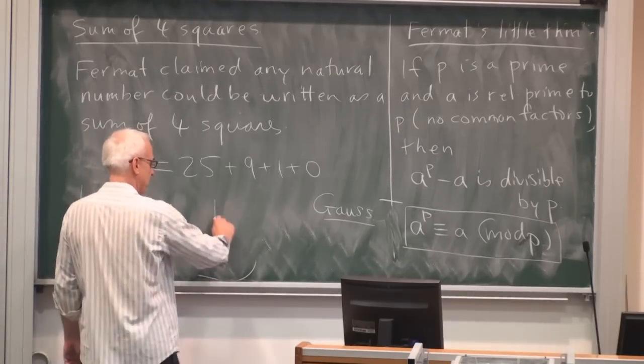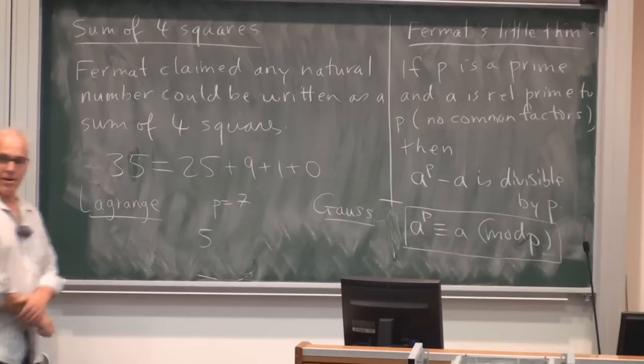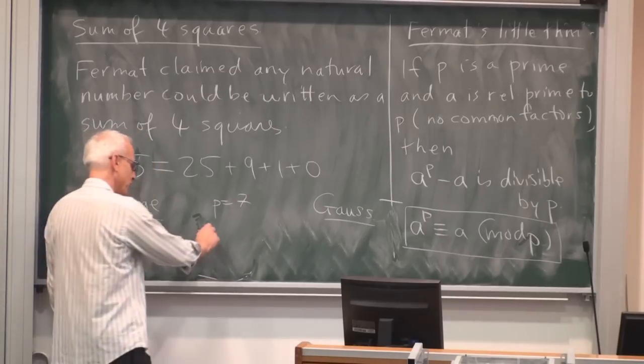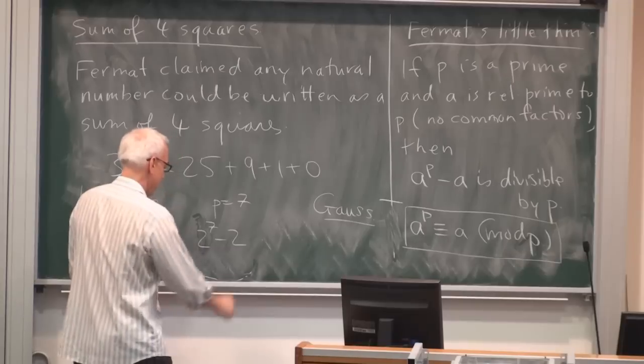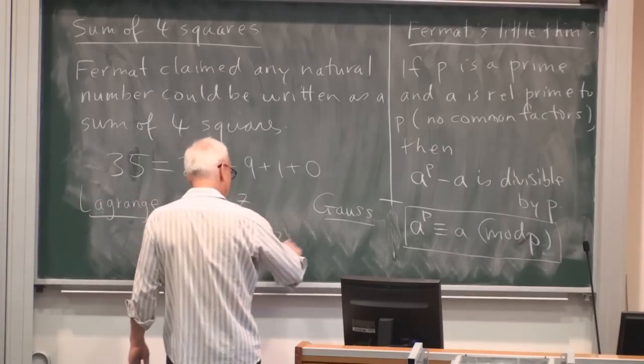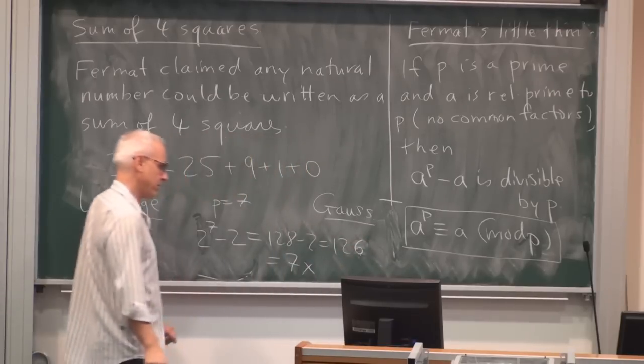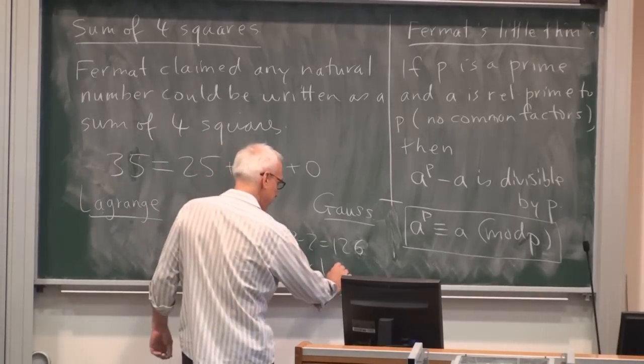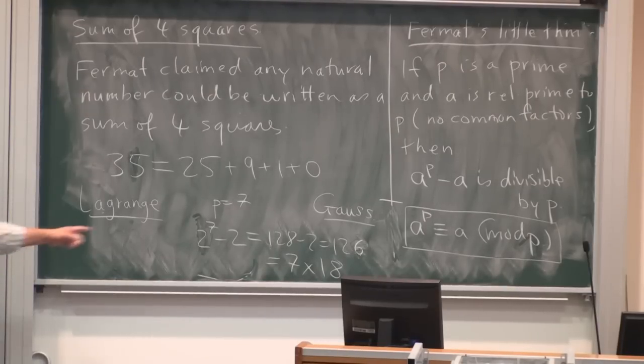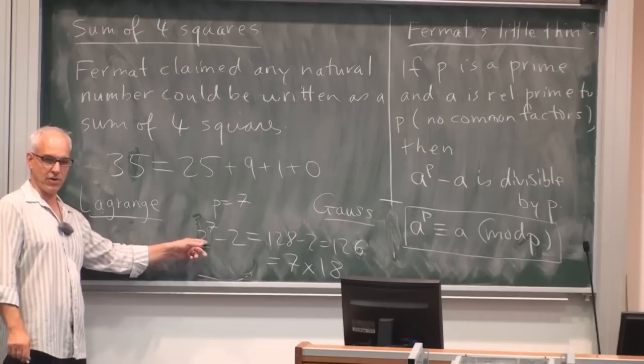So I was very interested in divisibility questions. And he would have not written it this way. But later on, Gauss introduced what was called congruence arithmetic. And Gauss would have rewritten this in the form A to the P is congruent to A mod P. That's an equivalent statement using Gauss's congruence language. So for example, if we take P equals 7, let's say, and we take some number, say 5. Maybe 5 is a bit too big. Let's take, okay, 2. What is 2 to the 7 minus 2? Okay, so what's 2 to the 7? 128. So this is 128 minus 2, which is 126. And that is 7 times 18. It's divisible by 7. And that works not just for 2, it also works for 3, for 4, for 5, for 6, for 723. As long as 723 is not divisible by 7.